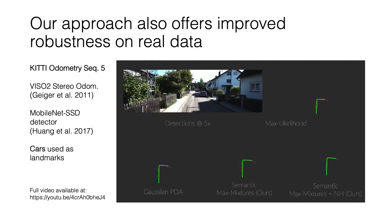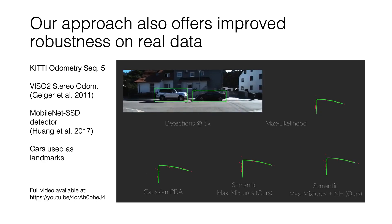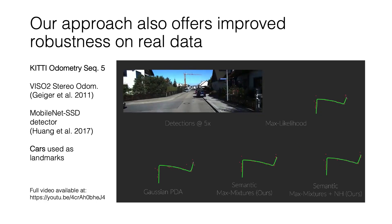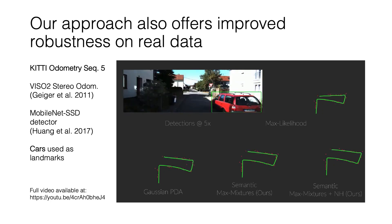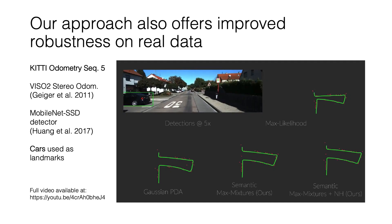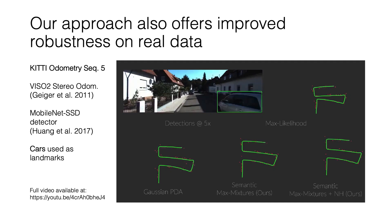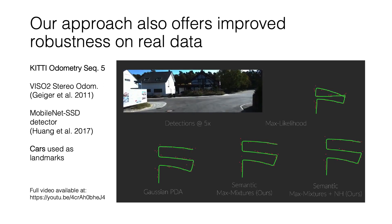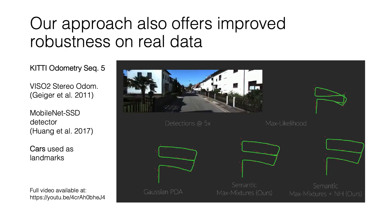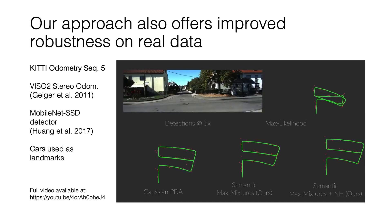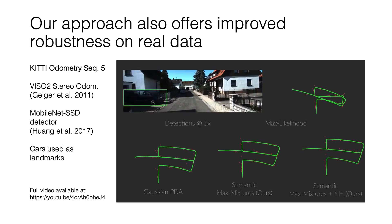We also found that our approach offered improved robustness on real data. Here, we tested the accuracy of our semantic SLAM system on a benchmark odometry sequence from the KITTI dataset. We used the VISO2 stereo odometry system in conjunction with the MobileNet SSD object detector, using cars as landmarks for navigation. The maximum likelihood approach quickly fails once even a few incorrect data associations are made. In contrast, our approach produces reasonable trajectory estimates despite noise in detections and a few moving landmarks. Both of these videos can be found in full at the link on the screen.